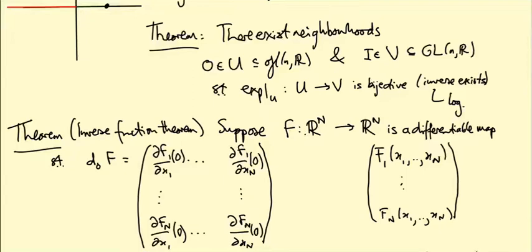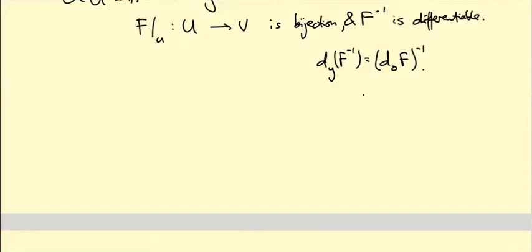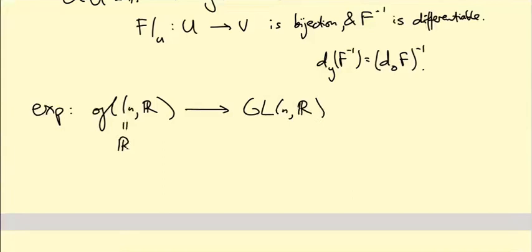We're going to apply it to the exponential map. First, how do we see the exponential map as going from R^n to R^n? Because the exponential map goes from little GL(n,R), that is n by n matrices, to big GL(n,R), that is invertible n by n matrices. Well, I claim that we could think of little GL(n,R) as a Euclidean space, as a vector space. It has n-squared coordinates, which are the matrix entries: A₁₁ up to A_nn. So we can really think of it as R^(n²). And similarly, GL(n,R) is contained in R^(n²). We have n-squared coordinates, which are the matrix entries. That's how we're going to translate into the language of the inverse function theorem.